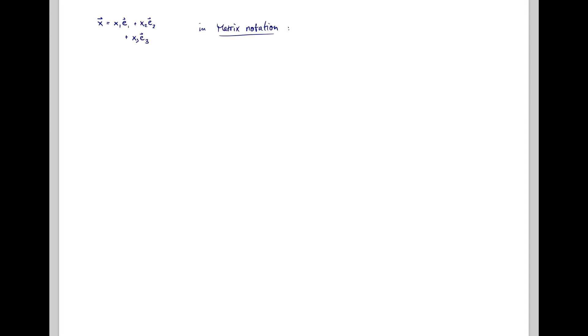In matrix notation, we write x as a column vector with three elements: x1, x2, x3.